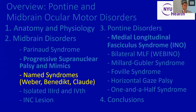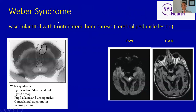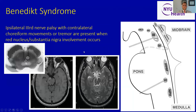Now we'll move on to named syndromes that can occur in the midbrain, all named in the 19th century: Weber syndrome, Benedict syndrome, and Claude syndrome. Weber syndrome is the clinical syndrome that occurs when a fascicular lesion of the third cranial nerve co-occurs with contralateral hemiparesis originating in the cerebral peduncle. Weber syndrome is characterized by the ocular position of down and out, lid droop, dilated pupil, and contralateral hemiparesis. Benedict syndrome is somewhat more dorsal in location, involving third nerve palsy on one side with contralateral abnormal movements — typically choreiform or tremor — because of co-localization between the fascicle of the third cranial nerve and the red nucleus.